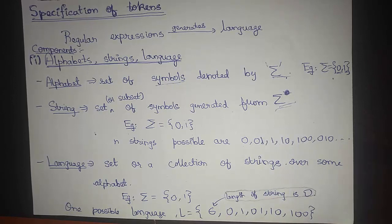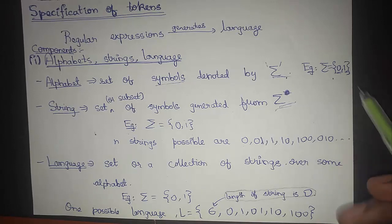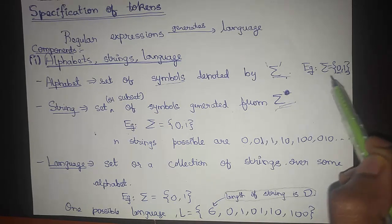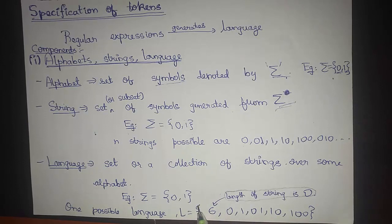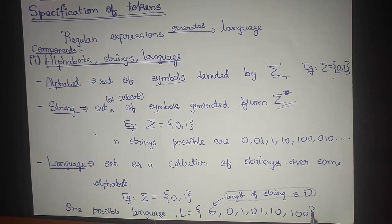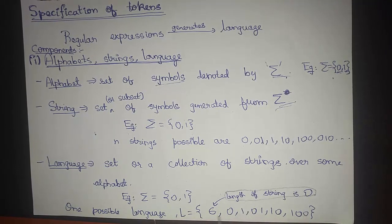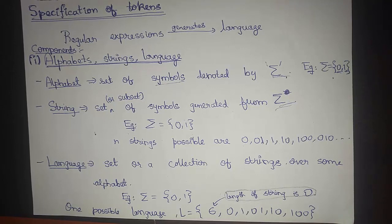What is a language? A language is a set or a collection of strings over some alphabet. Over that alphabet we have different sets or collections of strings, and this collection of strings is assigned to L — L is a language consisting of all these strings. Epsilon defines the length of the string to be 0.